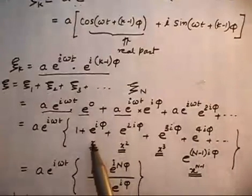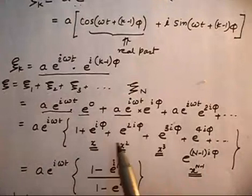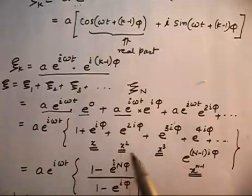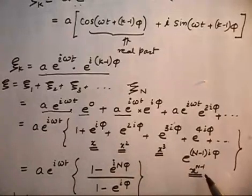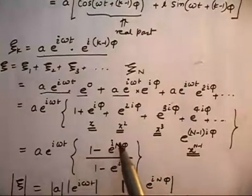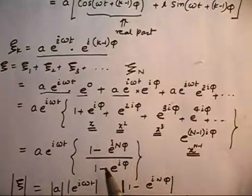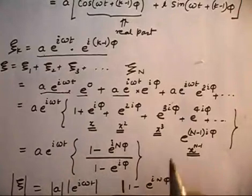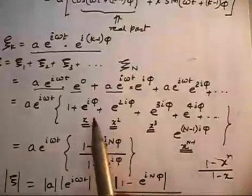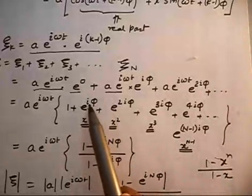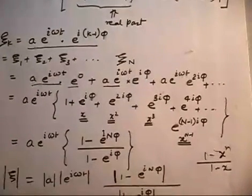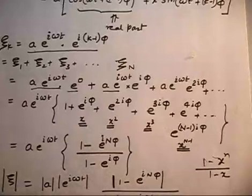Letting x = e^(iφ), this is a geometric series 1 + x + x² + x³ + ... + x^(n−1). The sum of a geometric progression is (1 − x^n)/(1 − x), which becomes (1 − e^(inφ))/(1 − e^(iφ)). To find the resultant amplitude I take the modulus of ξ. Using the property that |AB/CD| = |A|·|B|/(|C|·|D|), I can take the modulus of numerator and denominator separately.